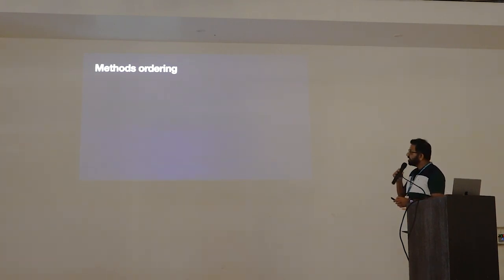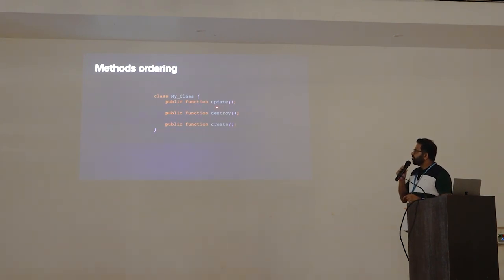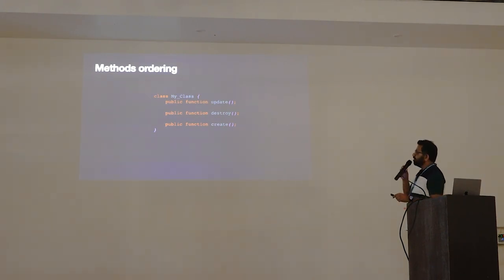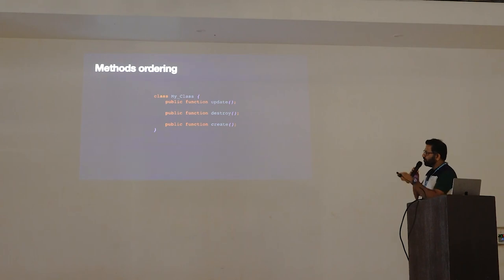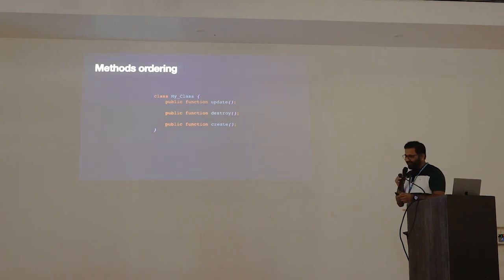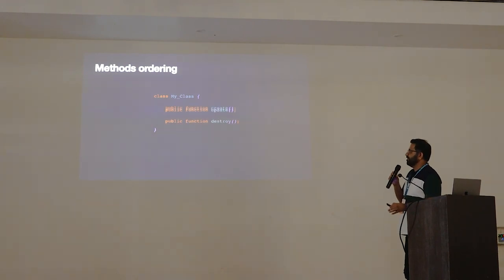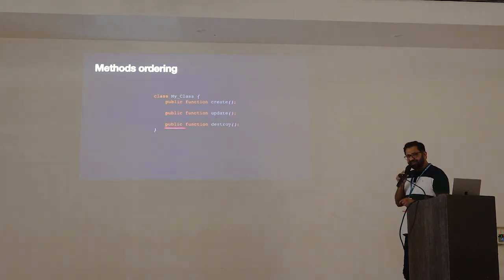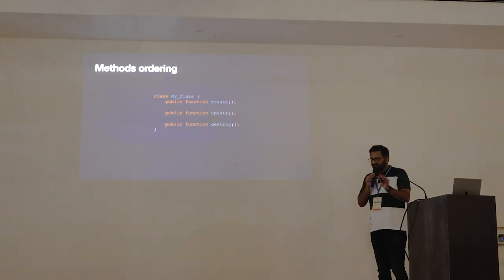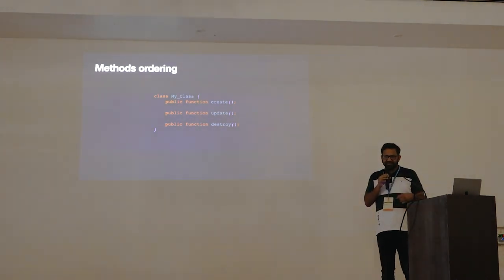A very simple thing to do: here is a class where we have update, destroy/delete, and create methods, but the order is not correct. Make sure your methods are ordered properly in a class — for example, create first, then update, then delete. This will not affect the execution of the code; it is just for readability.